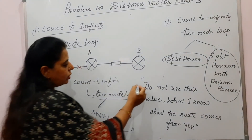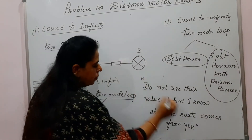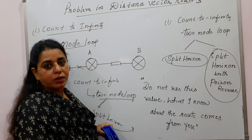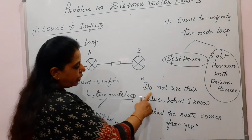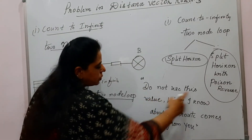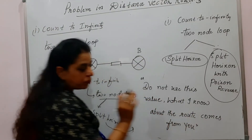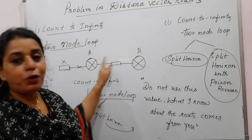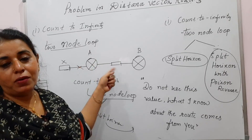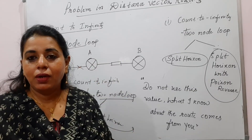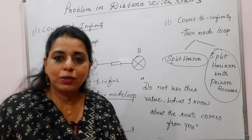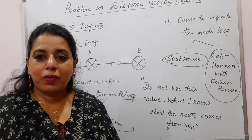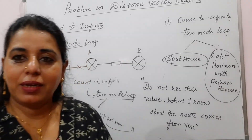With split horizon with poison reverse, B can send information to A about reaching X, but with a warning: do not use this value — what I know about the route comes from you. This is the safest way for a node to convey information it is not certain about. To summarize: the problem is count to infinity; one example where it occurs is the two-node loop; the solution is split horizon; split horizon has its own problem; and the ultimate solution is split horizon with poison reverse. Hope the explanation is clear. Thank you, bye-bye, take care.